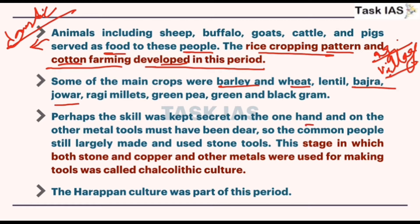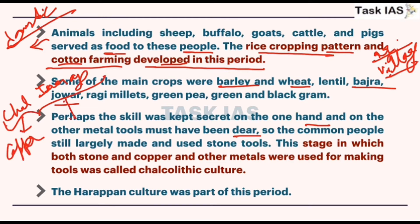Perhaps the skill was kept secret, and metal tools must have been expensive. So common people still largely made and used stone tools. Now if we compare Chalcolithic and the later Iron Age — both involve metals — but in the Chalcolithic period, copper and bronze were very dear, very expensive metals, whereas iron which came later was cheaper.